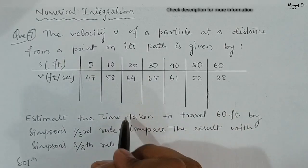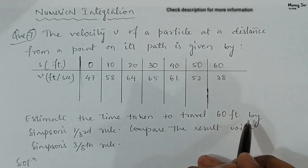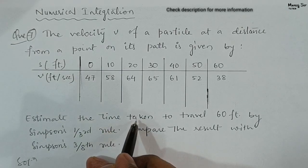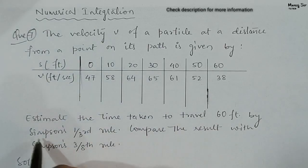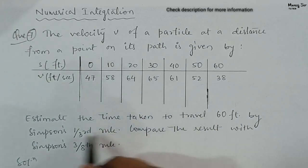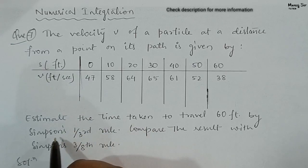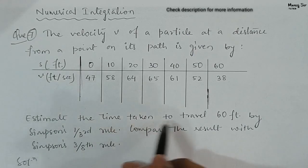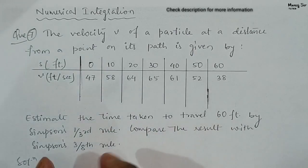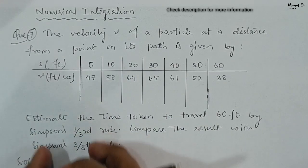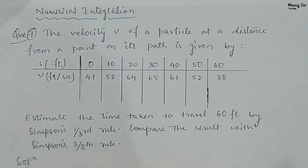We need to find the time taken to travel 60 feet by using Simpson's one-third rule. After finding the time taken by this rule, we need to compare the result with Simpson's 3/8 rule. So here we need to find the time taken to travel 60 feet by using both rules: Simpson's one-third rule and Simpson's 3/8 rule.